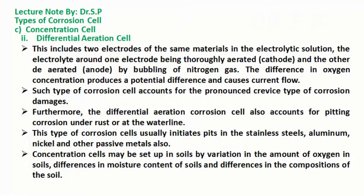Differential Aeration Cell. This includes two electrodes of the same material in an electrolytic solution, where the electrolyte around one electrode is thoroughly aerated (cathode) and the other is deaerated (anode) by bubbling of nitrogen gas. The difference in oxygen concentration produces a potential difference and causes current flow. Such a corrosion cell accounts for the pronounced crevice type of corrosion damage.